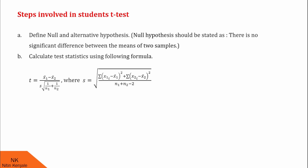Next, we calculate the test statistic using the formula: T equals x1 bar minus x2 bar, divided by s into under root of (1/n1 plus 1/n2). Where x1 bar is the mean of the first sample, x2 bar is the mean of the second sample, s is the pooled deviation, n1 is the size of the first sample, and n2 is the size of the second sample. The formula for s is: under root of [summation(x1i minus x1 bar) squared plus summation(x2i minus x2 bar) squared], divided by (n1 plus n2 minus 2).